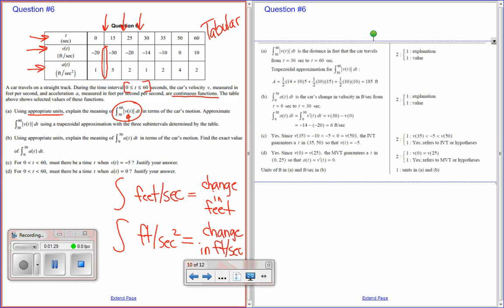So now let's go and see what the exact answers are. Now, since it's absolute value, it's not just going to be change in position. It's going to be change in the total distance traveled. So in order for you to get this point, you have to say it's the distance, and you must use the units in feet, that's one of the units, that the car travels from 30 to 60 seconds. You have to have both units and its change in distance.